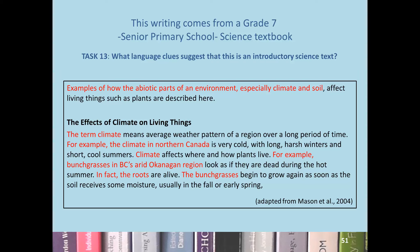Recall that the climate text comes from a grade seven science textbook. What language clues suggest that this is an introductory science text? You might have noticed that the text is not very detailed and doesn't have very specialized information, except perhaps for 'abiotic parts of the environment.' The information presented is quite basic, and the evidence it presents for the claim that climate affects plant growth is basic and easy to grasp from general experience.